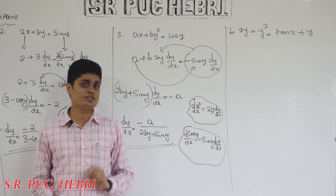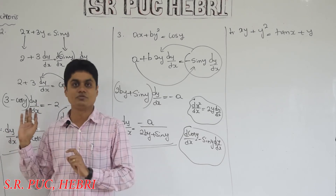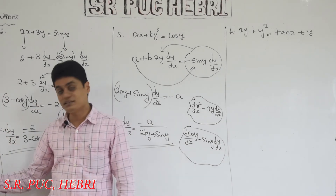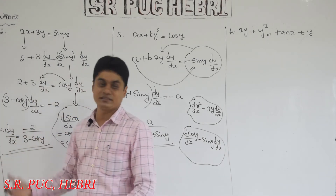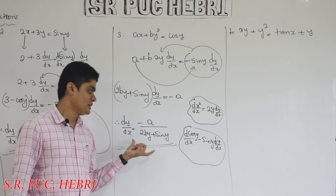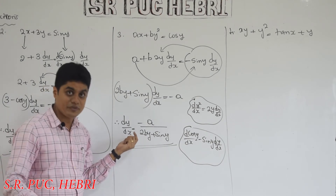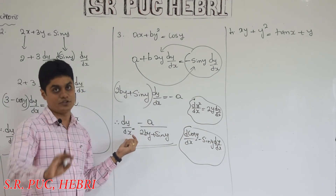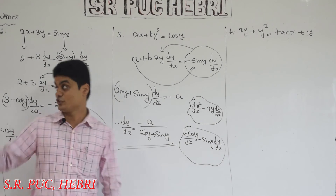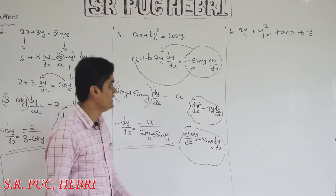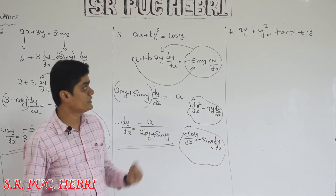Notice that in explicit function differentiation the final answer involves only one variable, perhaps only x. But in implicit function differentiation, the final answer may contain both variables x and y. Here the answer has only y, but in the next problems you will get both variables. If the answer is only in terms of x, you differentiated an explicit function; if it involves y or both x and y, it is a derivative of an implicit function.